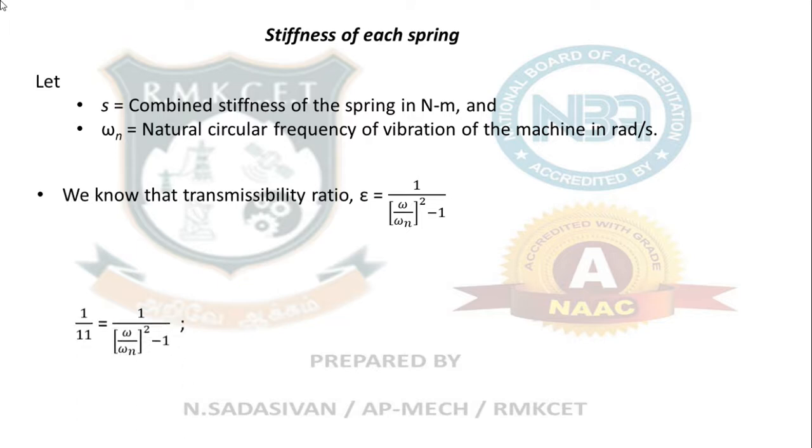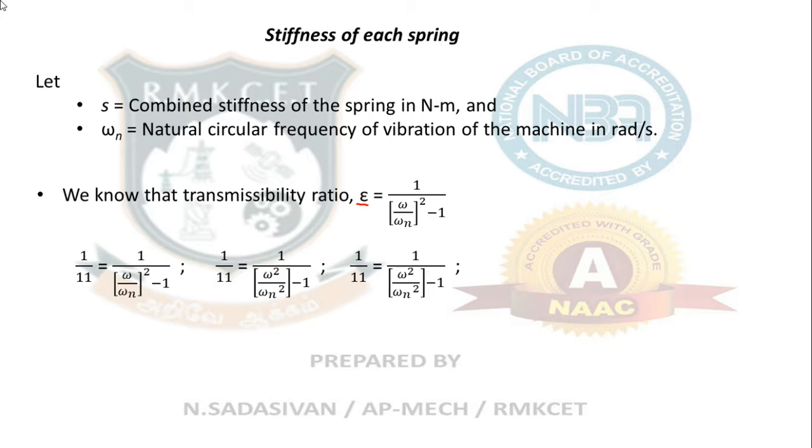Since epsilon is given in the question as 1/11, we have 1/11 = 1 / [(ω/ω_n)² - 1]. So 1/11 = 1 / [(ω²/ω_n²) - 1].